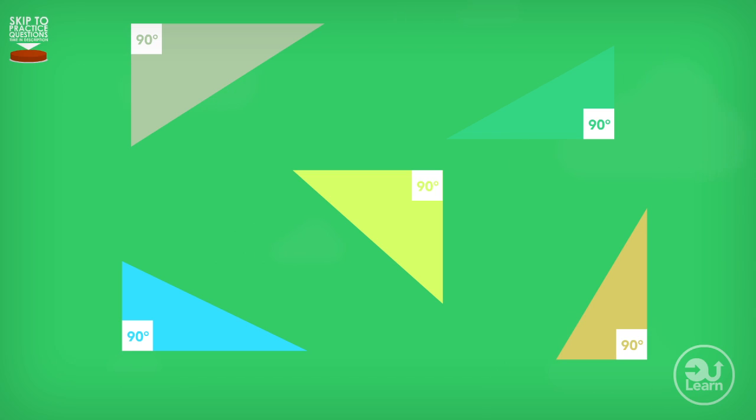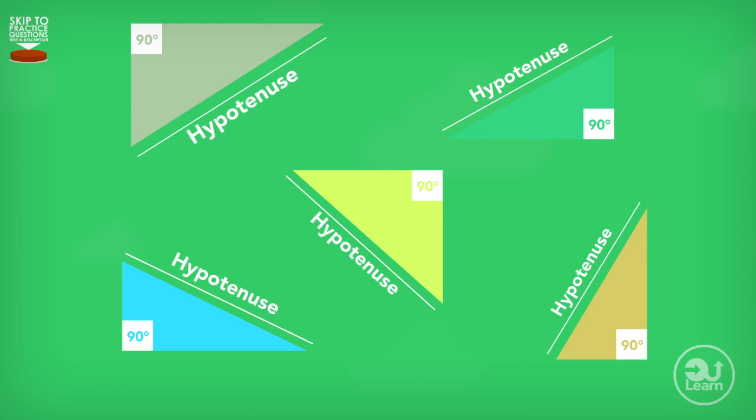Look at the following examples of right angled triangles. As you can see, all these right angled triangles, regardless of the size of their sides, have a side that is the longest. Once again, these sides are known as the hypotenuse.